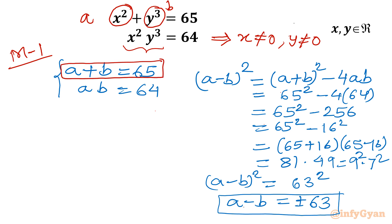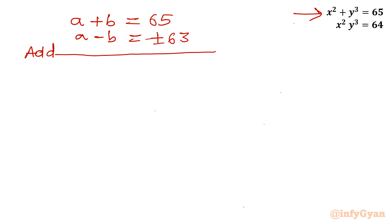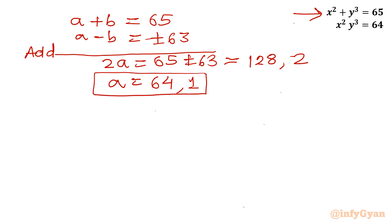I will add and subtract both equations. Writing a plus b equal to 65 as equation 1, and a minus b equal to plus or minus 63. Adding them: 2a equals 65 plus or minus 63. With the plus sign that gives 128, and with the minus sign it gives 2. Dividing both sides by 2, a equals 64 or a equals 1.